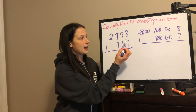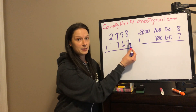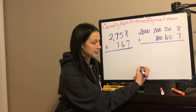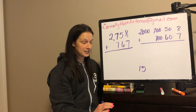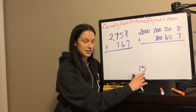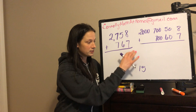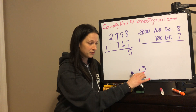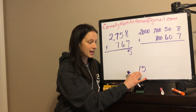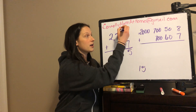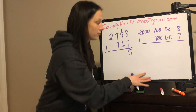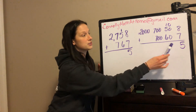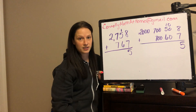Here we go. We are going to start in the ones place with 8 plus 7, and as you know, 8 plus 7 is 15. What happens in the standard algorithm is you're going to take the digit that's in the ones place and put it underneath the ones place. What happens with this extra group of 10 — because we have 15 ones here, that means we have a group of 10 and 5 ones — that extra group of 10 gets carried over above the tens place. So I put the 5 down and carried that group of 10.